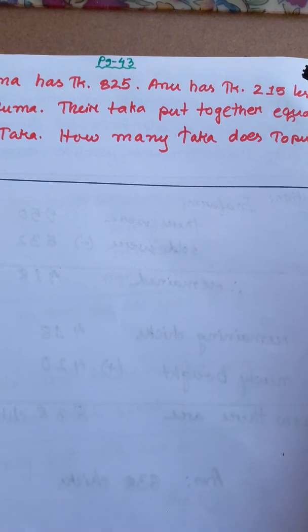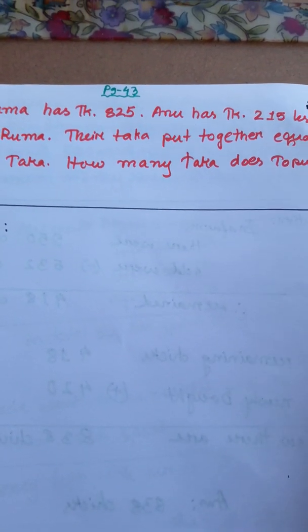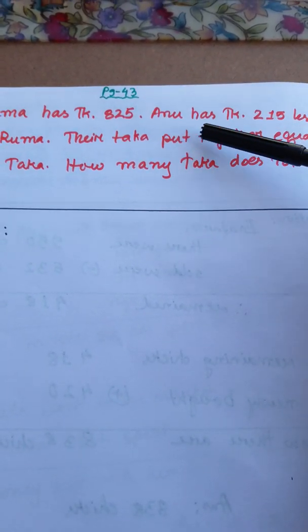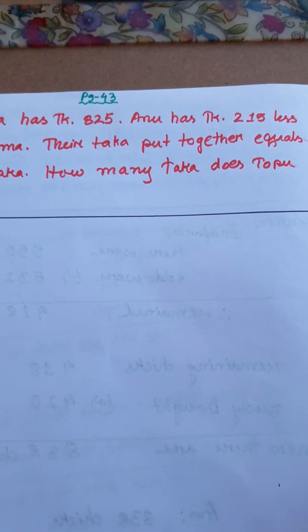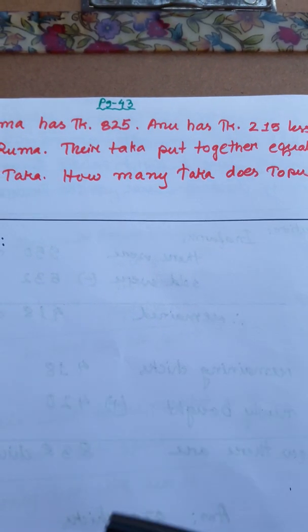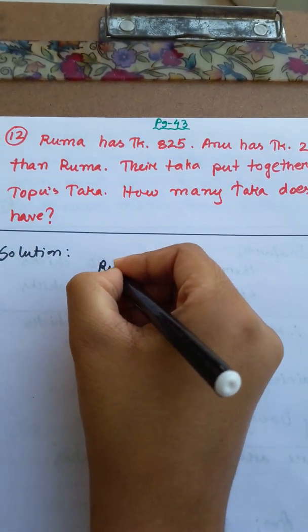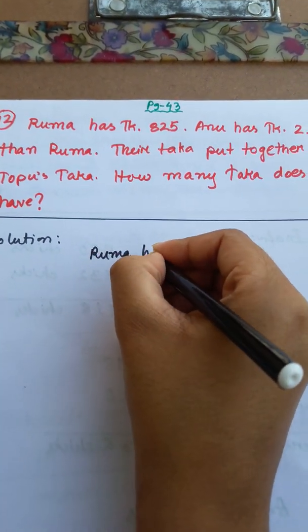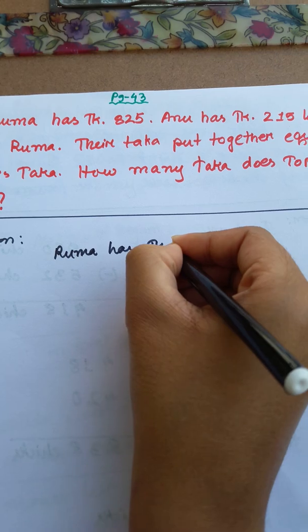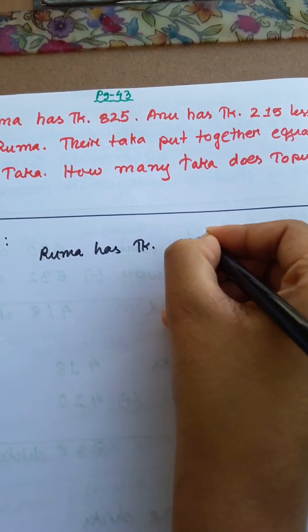Ruma has Taka 825. Anu has Taka 215 less than Ruma. Their Taka put together... So, Ruma has Taka 825.